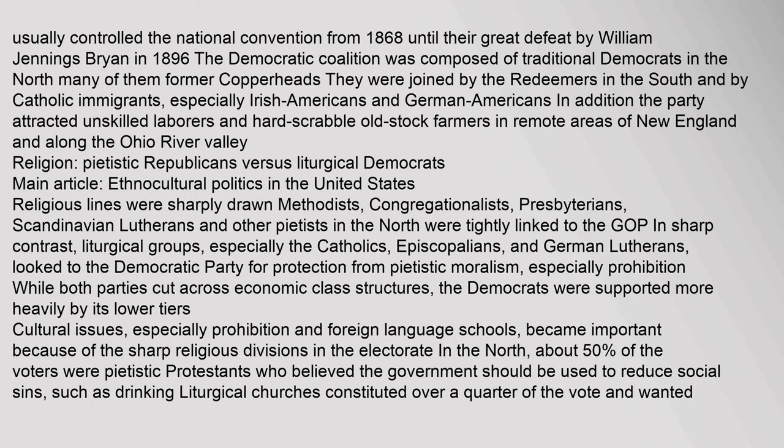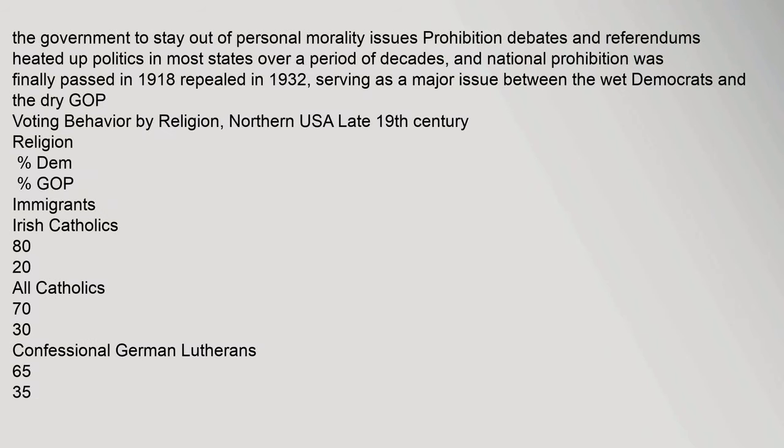While both parties cut across economic class structures, the Democrats were supported more heavily by its lower tiers. Cultural issues, especially prohibition and foreign language schools, became important because of the sharp religious divisions in the electorate in the north. About 50 percent of the voters were pietistic Protestants who believed the government should be used to reduce social sins such as drinking. Liturgical churches constituted over a quarter of the vote and wanted the government to stay out of personal morality issues. National prohibition was finally passed in 1918 and repealed in 1932.